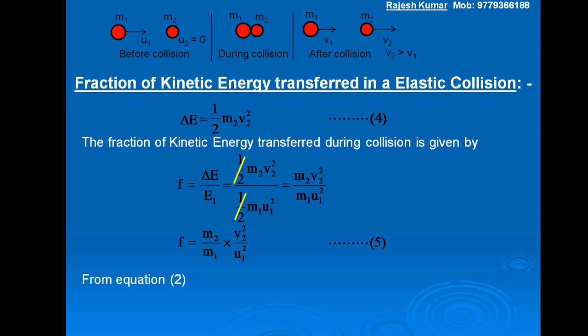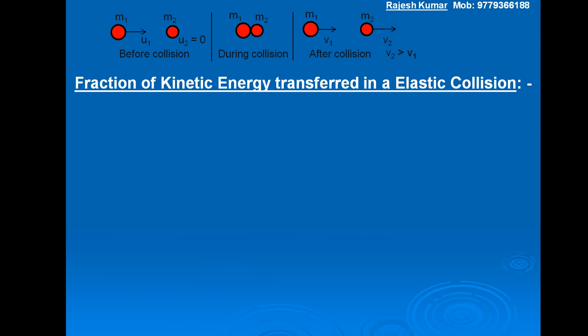Now, from equation 2, the velocity of the target object after collision is V2 = 2M1 / (M1 + M2) × U1. By solving this, we get V2 / U1 = 2M1 / (M1 + M2). Let this be equation 6. Putting this value into equation 5: